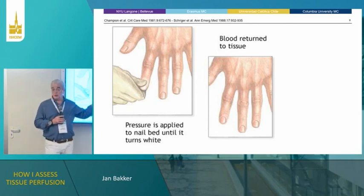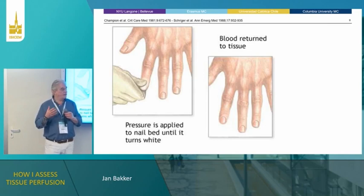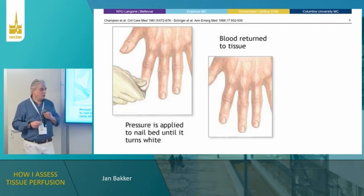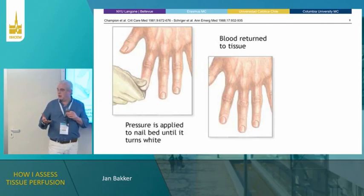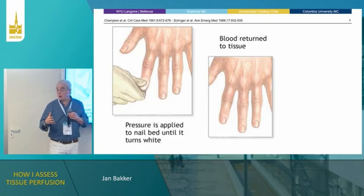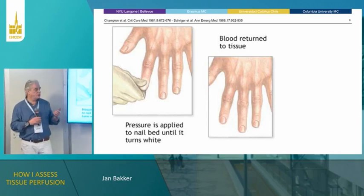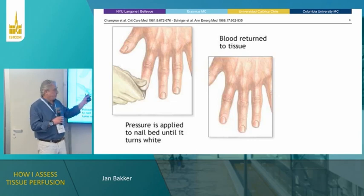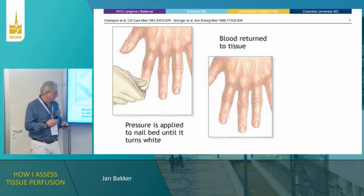If you want to use this in a study, you get into trouble because of bias. If I see a terribly ill patient and do capillary refill time, I'll count slowly — prolonged. If the patient is not so sick, I count quickly — two seconds. So when we developed the Andromeda study, we had a huge discussion about how to limit this extreme bias. That's why we use a glass slide and a phone timer.